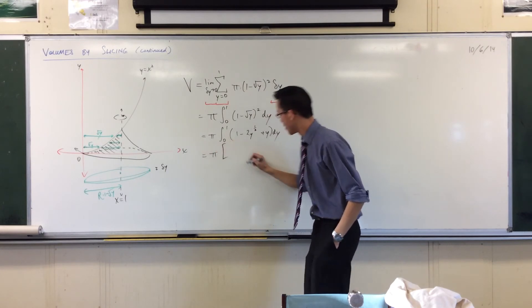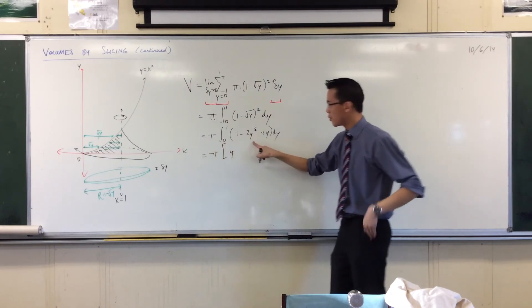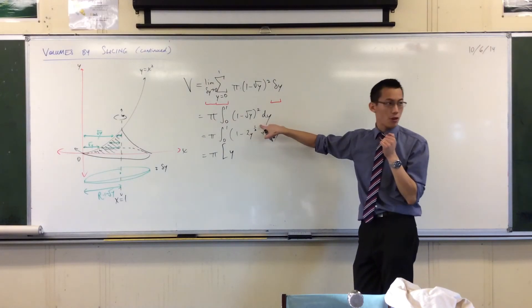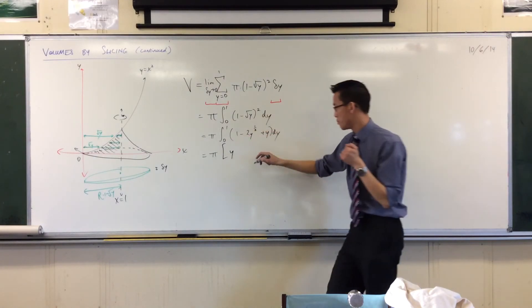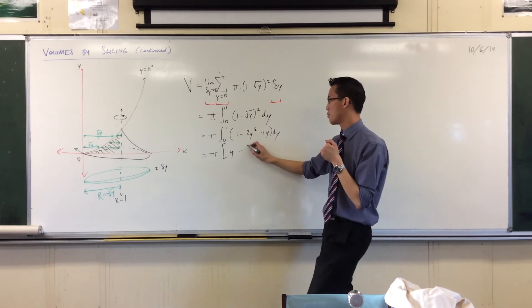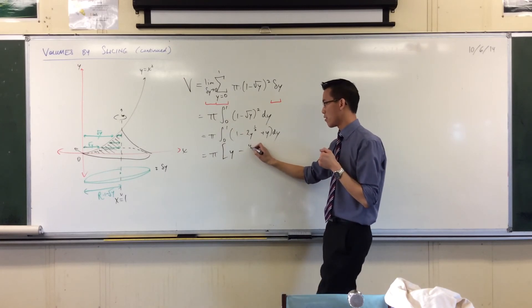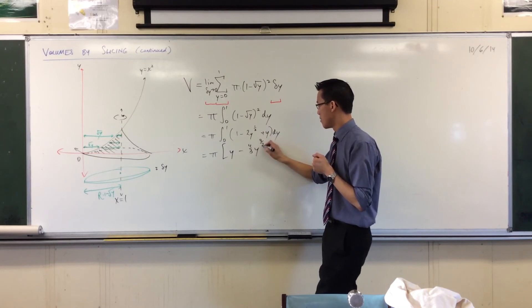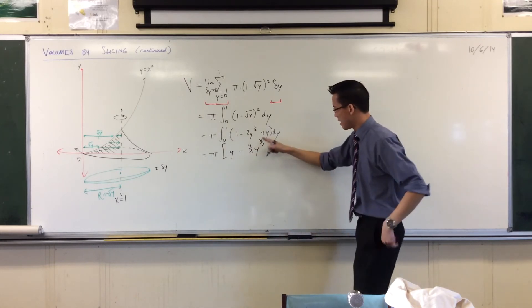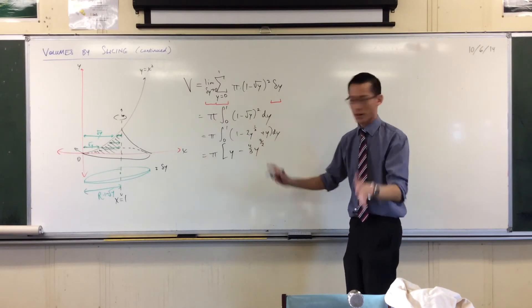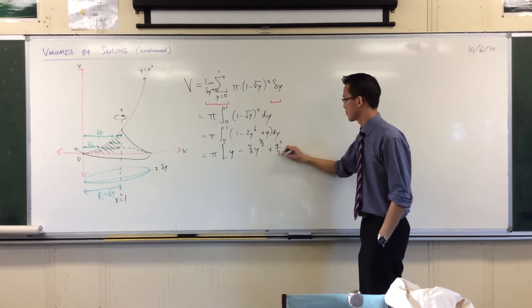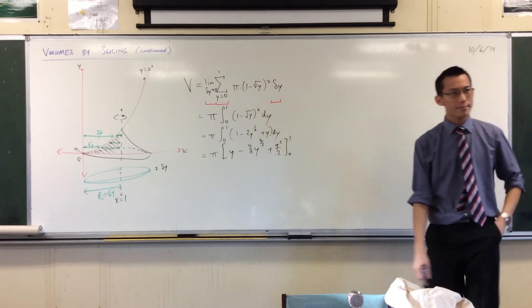Let's integrate. Okay. One turns into a y. What's this guy become? Power goes up to three on two, and then you divide by a new power. So I think it's going to be four on three, is that right? Yeah. And you can check that out by multiplying back and differentiating, right? That three, the threes will cancel, that four over two, cool, it works. Good. Plus y squared on two. From naught to one. Okay.